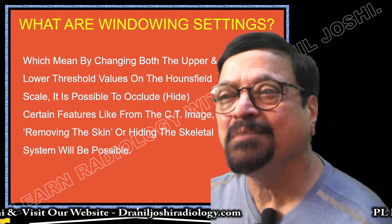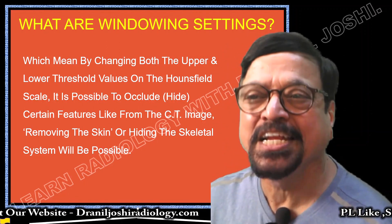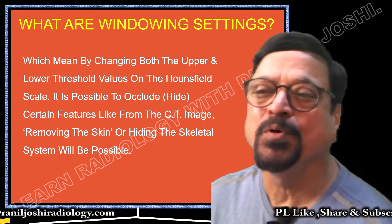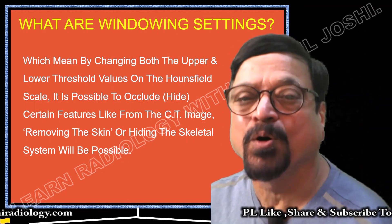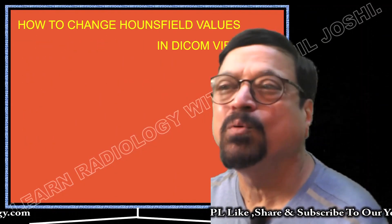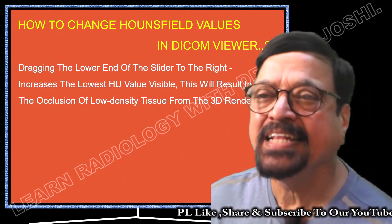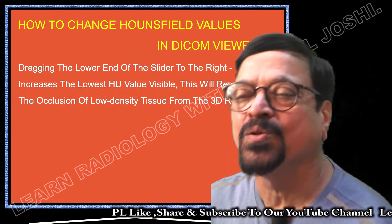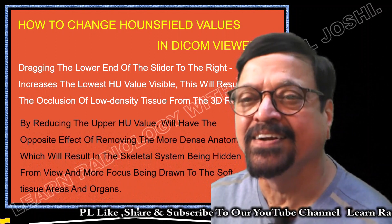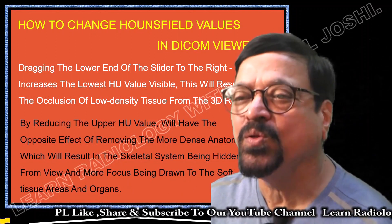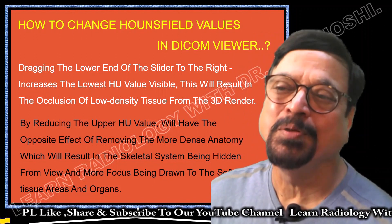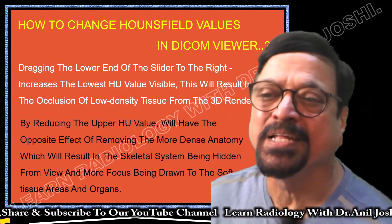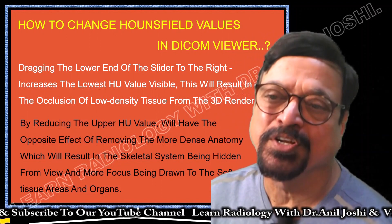By changing both the upper and lower Hounsfield Unit threshold values of the Hounsfield scale, it is possible to occlude or hide certain features from CT images — for example, removing the skin or hiding the skeletal system. By dragging the lower end of the slider to the right, you increase the lowest tissue value visible, resulting in the occlusion of low-density tissues. Reducing the upper tissue value has the opposite effect — more dense anatomy such as the skeletal system is hidden from view, drawing more focus to the soft tissue areas of the organ.